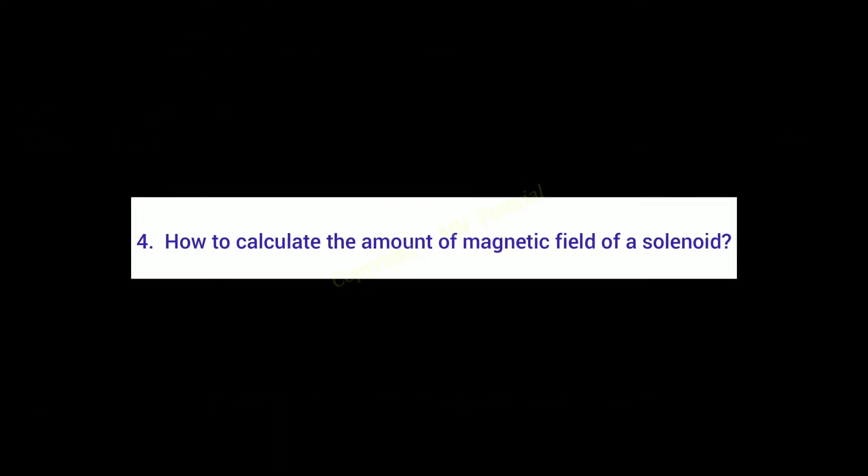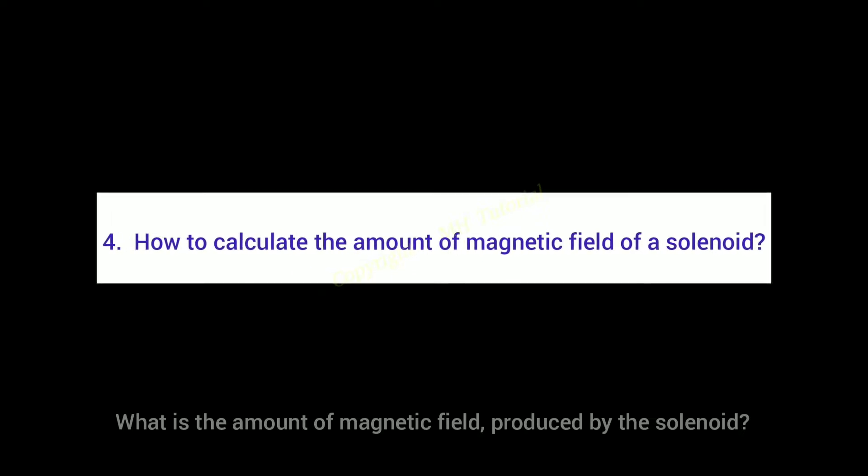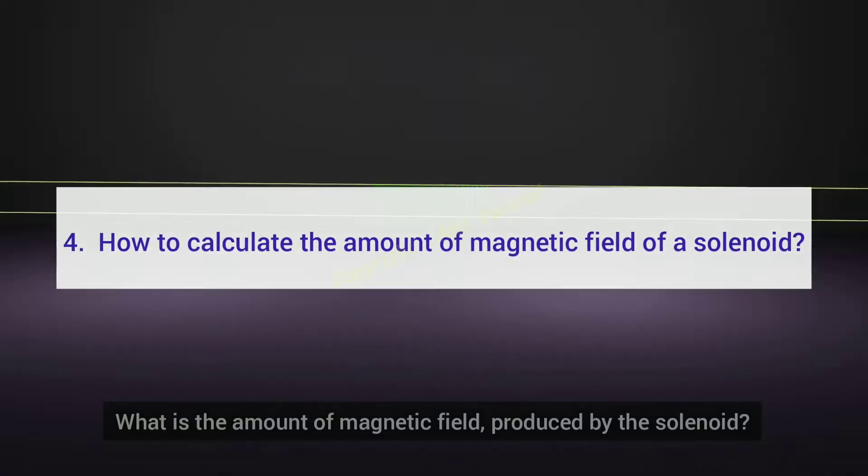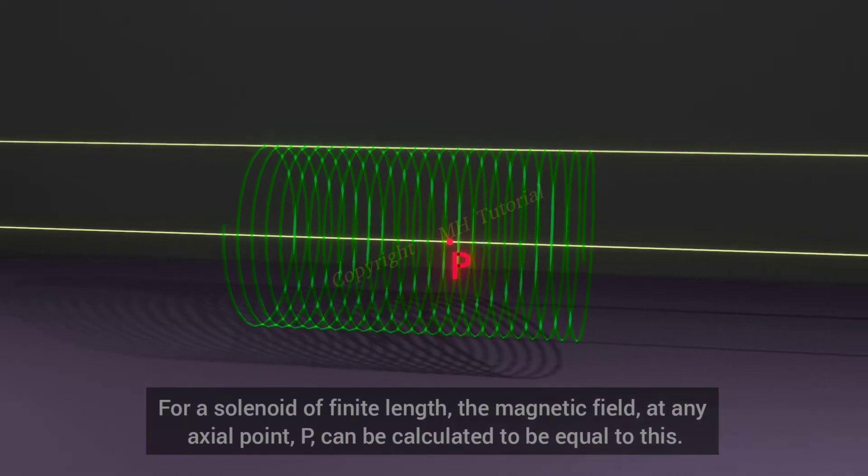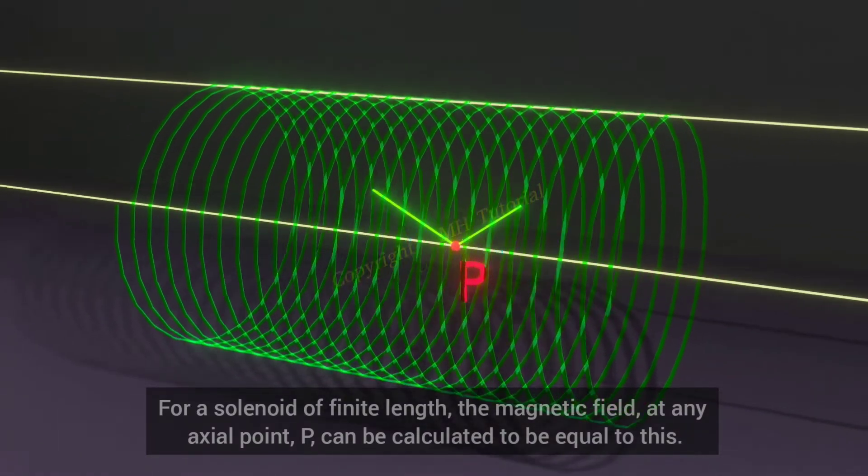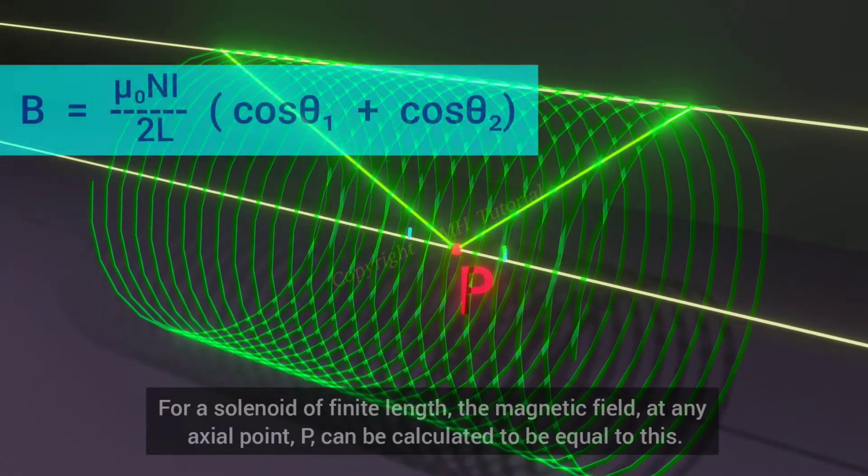Fourth question. What is the amount of magnetic field produced by the solenoid? For a solenoid of finite length, the magnetic field at any axial point P can be calculated to be equal to this.